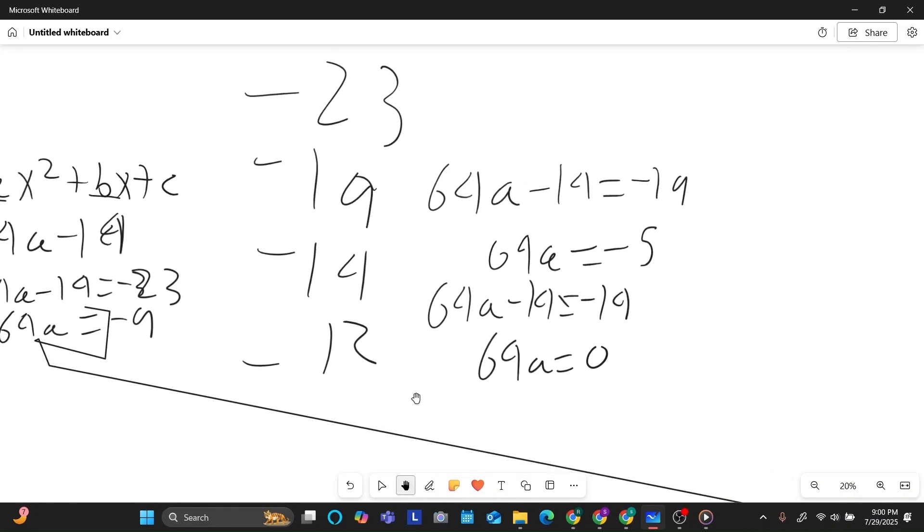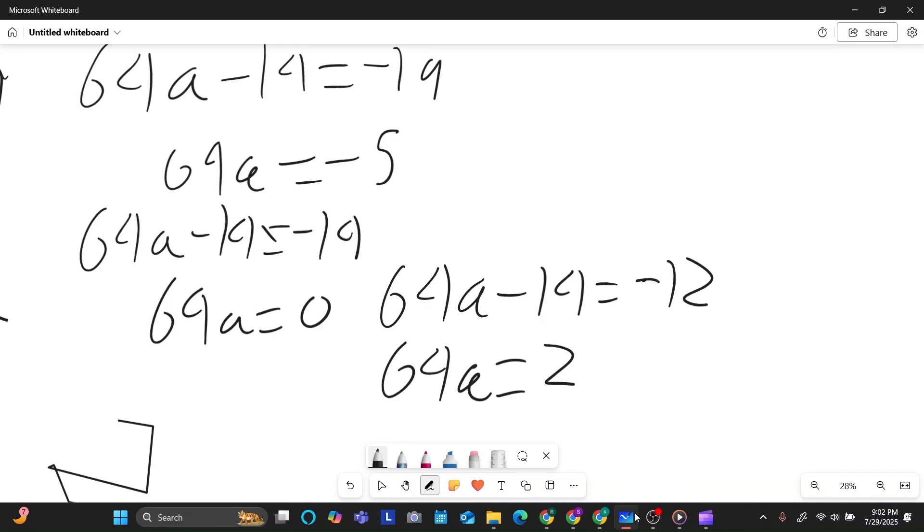And that's going to leave me with d. 64a minus 14 equals negative 12. If I was to add 14 to both sides, then I get 64a equals 2. And I'd finally get some positive value for a. I don't even care to know what it is. I just know that the only value of a plus b plus c that's possible here is negative 12.